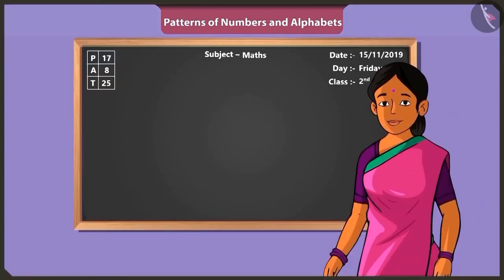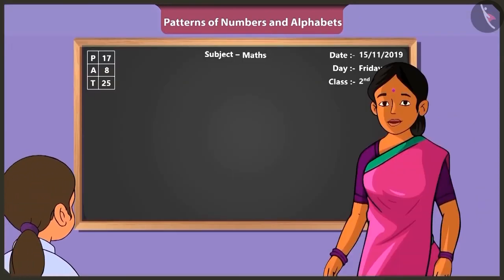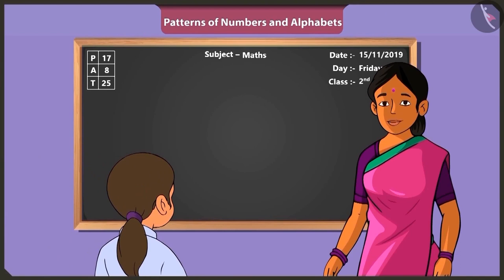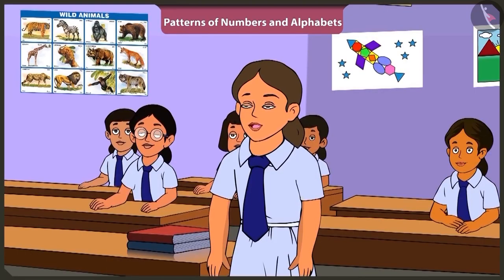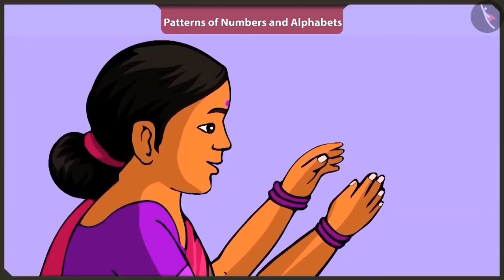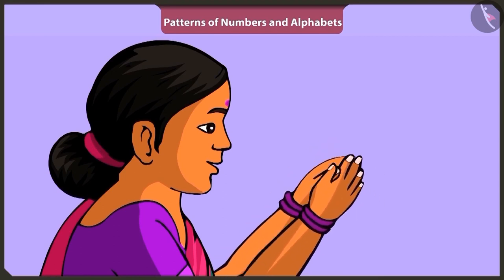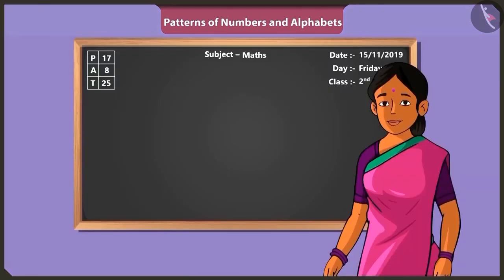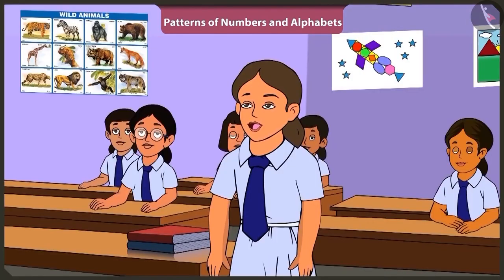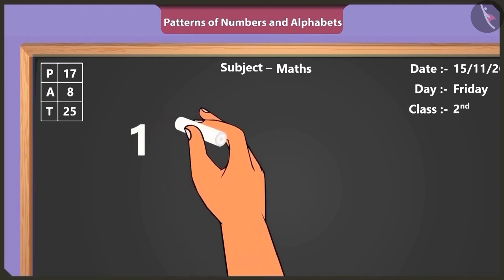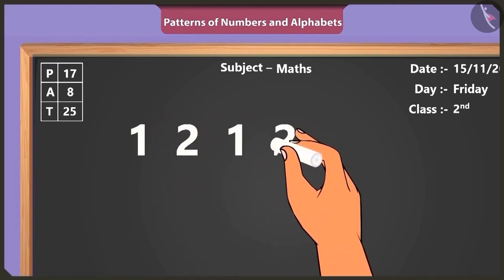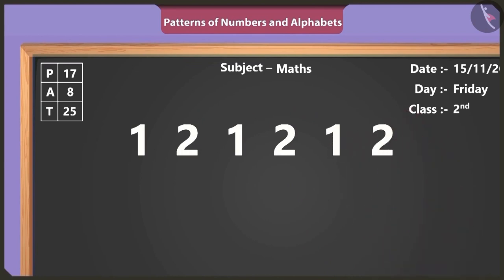Fun game? Yes, Vinny, come here. I will clap for some time, and you have to listen to my claps carefully. Then you have to count the number of claps and write it on the board. Okay, ma'am. How many times did I clap? I heard one clap first, then two claps, and this continued: one, two, one, two.